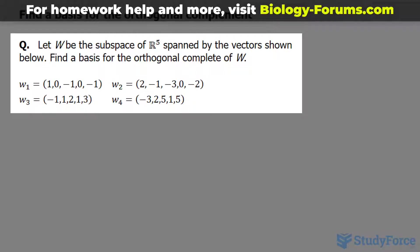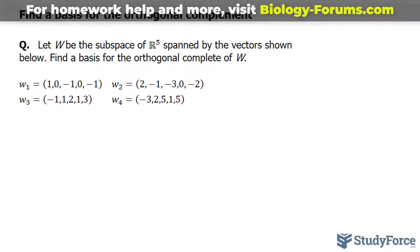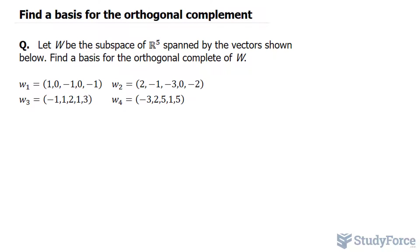To tackle this problem, what I will first do is put these vectors as rows in a matrix. Then, the space they span is the row space, that is the matrix W. The orthogonal complement of the row space is the null space. So, all this question is really asking us is to find the null space basis.